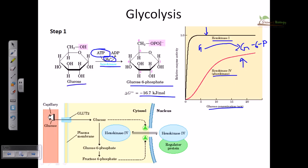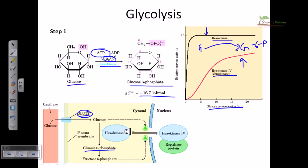When there is a lot of glucose in the blood, glucose enters the cytosol through glucose transporters GLUT2 or GLUT4. Inside the cytosol, glucose needs to be converted into glucose-6-phosphate by either hexokinase I or hexokinase IV, and we need ATP to transfer the phosphate to the sixth carbon position of glucose.